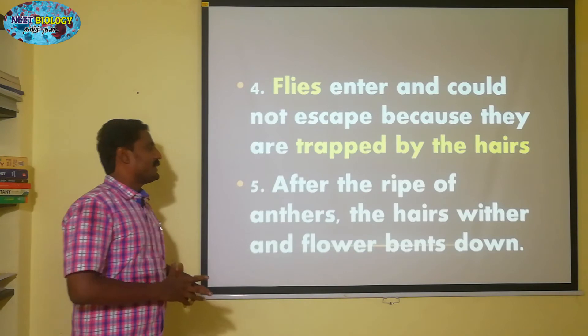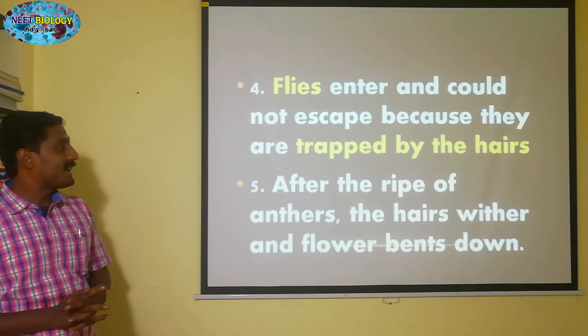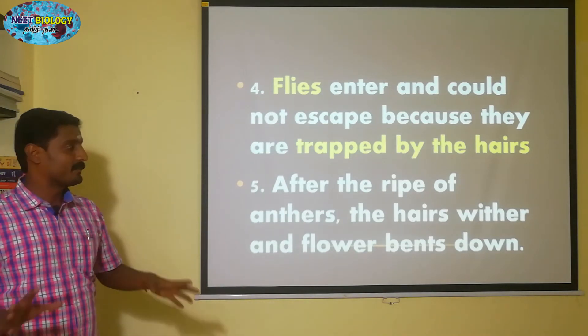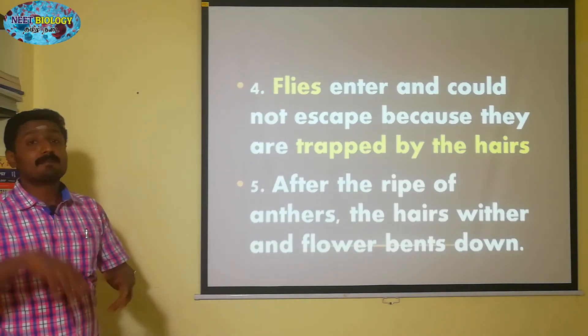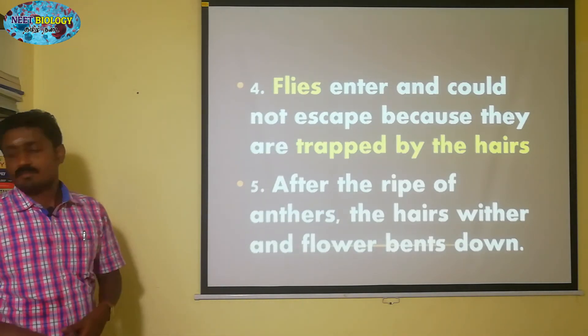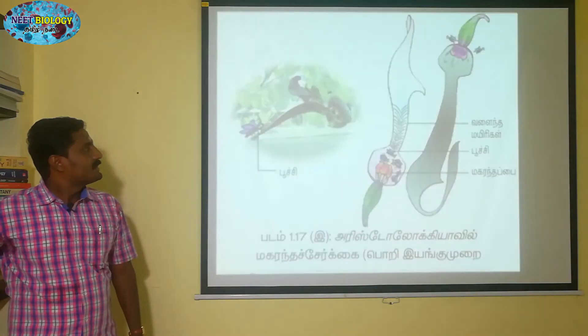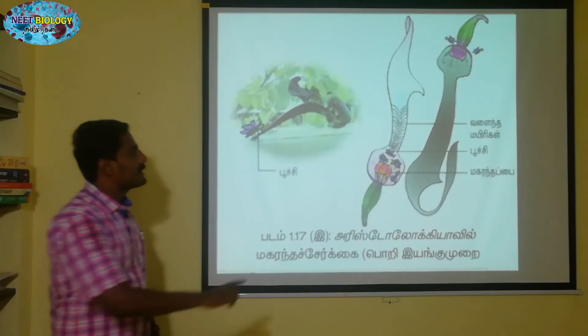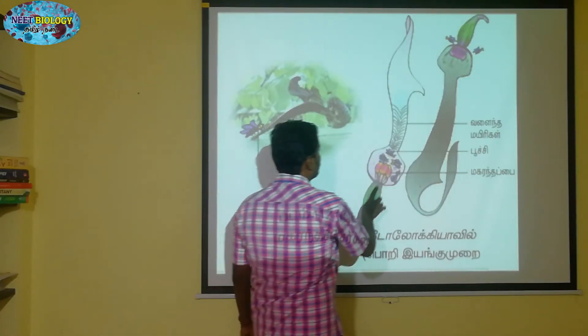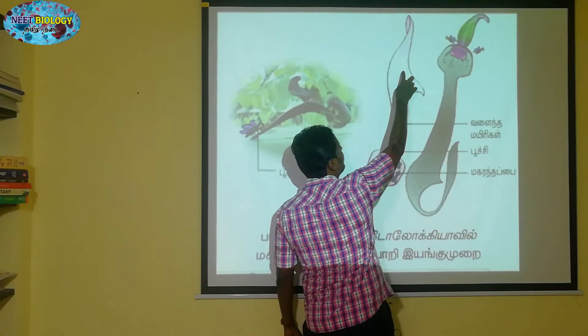After the ripening of anthers, the hairs wither. The flower bends down. Actually, this flower is in a wilted condition — this is the wilted condition.